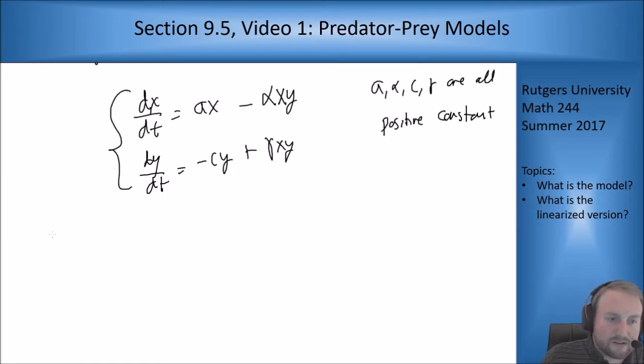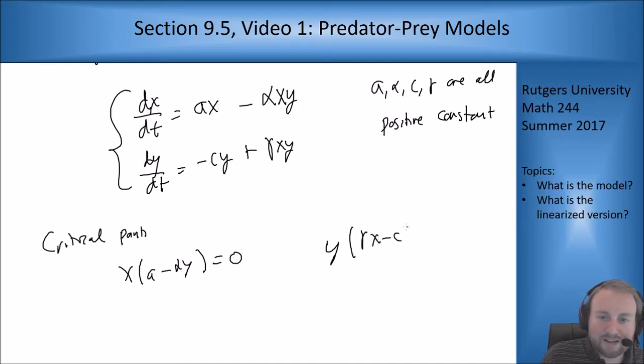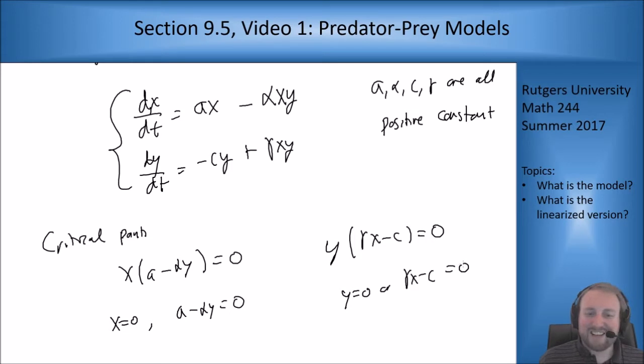Critical points. Well the first equation just becomes x times (a minus alpha y) equals zero and the second becomes y times (gamma x minus c) equals zero. So if x equals zero or a minus alpha y equals zero, and y equals zero or gamma x minus c equals zero. But if a and c are both positive constants then if x is zero I can't have this being zero because this would just be minus c. So I have to have y equals zero. And then if I have this one over here then y can't be zero so I have to pick the second one here.